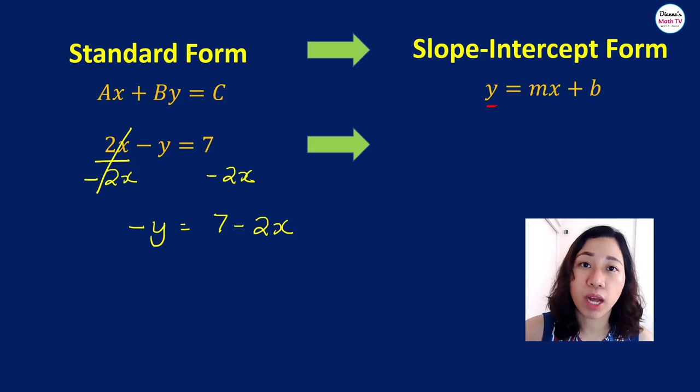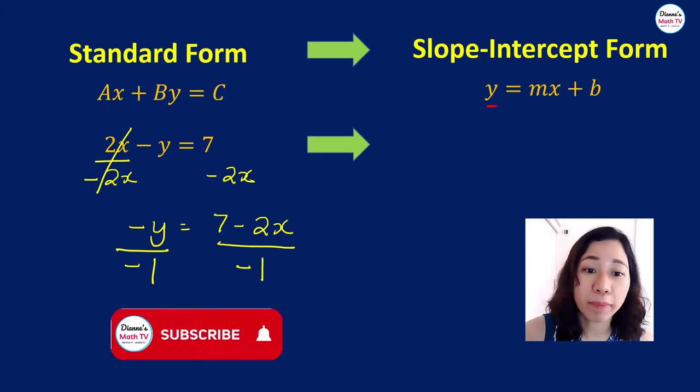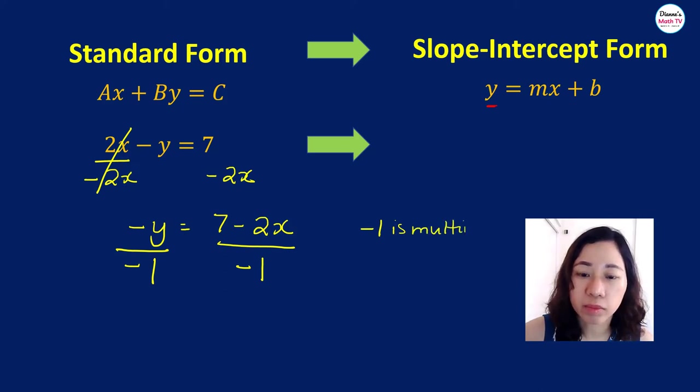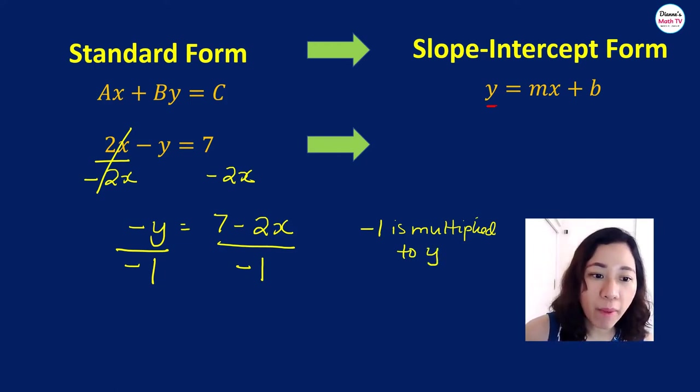But remember that what we want is y. In this case, I have negative 1 multiplied to y. We want to remove that negative 1. So what will we do? Since negative 1 is multiplied to y and we do not want that, we divide both sides by negative 1. The opposite of multiplication is division. So we now have negative y over negative 1. That is now y.